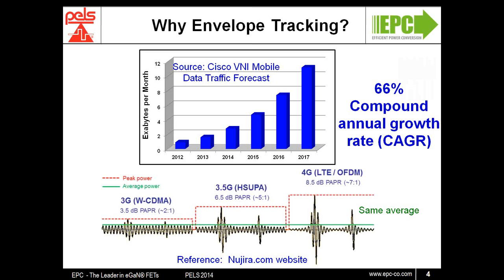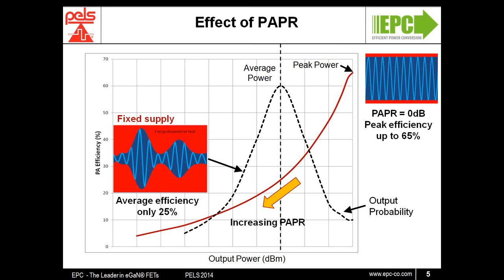To better understand why, a conceptual RF amplifier efficiency graph versus output power is shown. We can see that at maximum output power, a peak efficiency of as high as 65 percent is achievable. However, as the peak-to-average power ratio increases, the amplifier spends more and more time at lower and lower average output power, and you end up with a system that has an efficiency of about 25 percent or even lower. With the difference between the DC supply voltage and the modulated RF envelope, the output directly translates into losses.